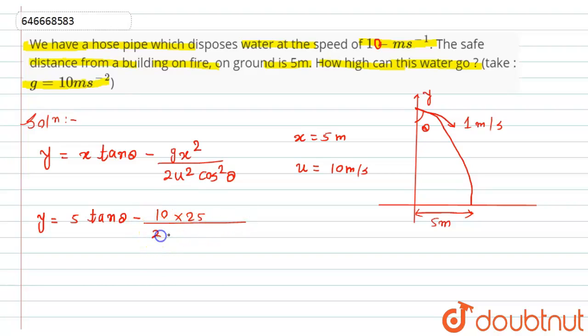divided by (2 × 10² cos² θ) = 250/(200 cos² θ). Now 1/cos² θ equals sec² θ, so we can write the equation as: 5 tan θ - (250/200) sec² θ